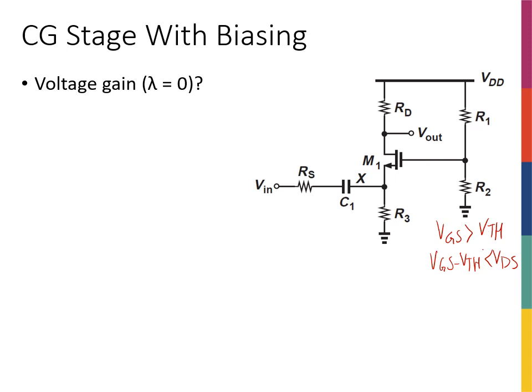To avoid the floating source problem, we need R3 connected at that node. That is the complete reasoning behind why the biasing of a common gate amplifier is designed this way. If you only care about calculating the voltage gain, the reasoning above is the background context for why this biasing topology is used.